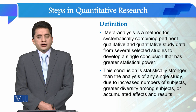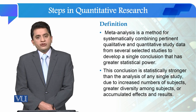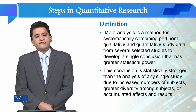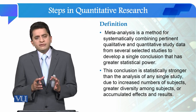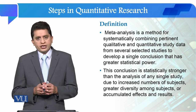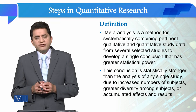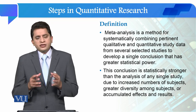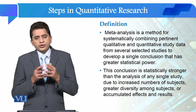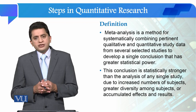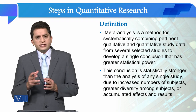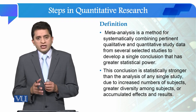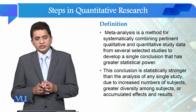Meta-analysis کس طرح مختلف ہے systematic literature review اور scoping review میں سے؟ کیونکہ اس میں ہم جو different studies already conduct ہو چکی ہوتی ہیں، ان میں جو qualitative اور quantitative inferences draw کر چکے ہوتے ہیں، ہم ان inferences کو ایک study میں integrate کرتے ہیں اور اس سے ایک collective inference draw کرتے ہیں جو زیادہ significant ہوتی ہے as compared to all those single studies.